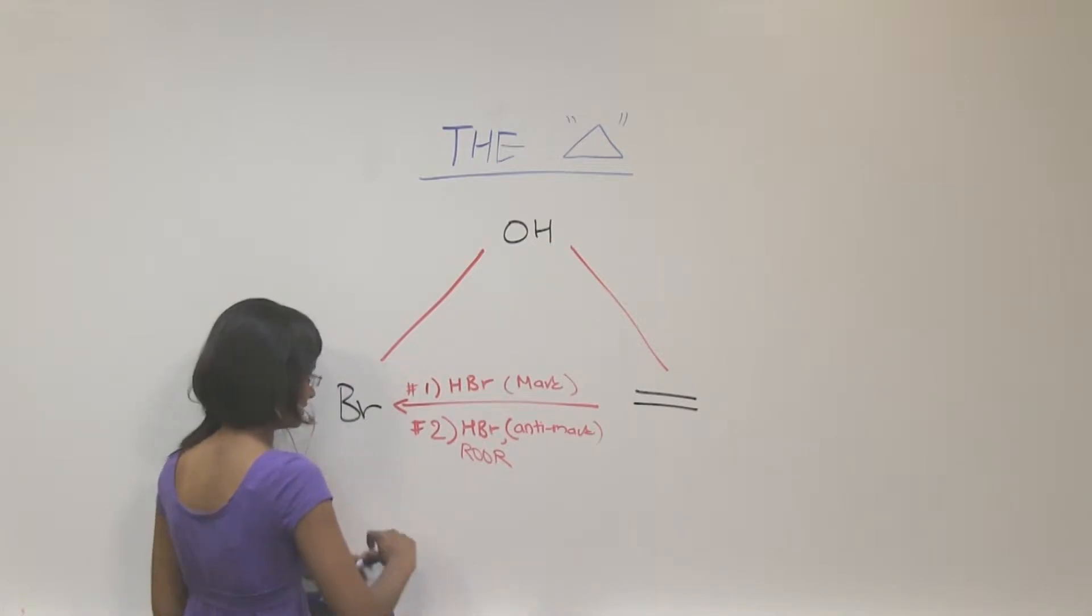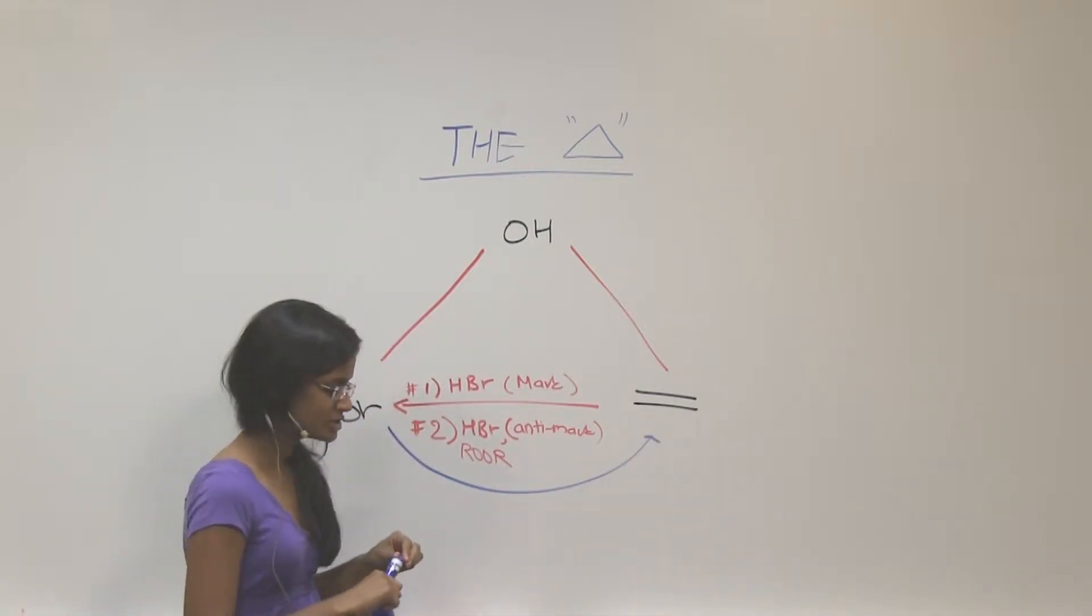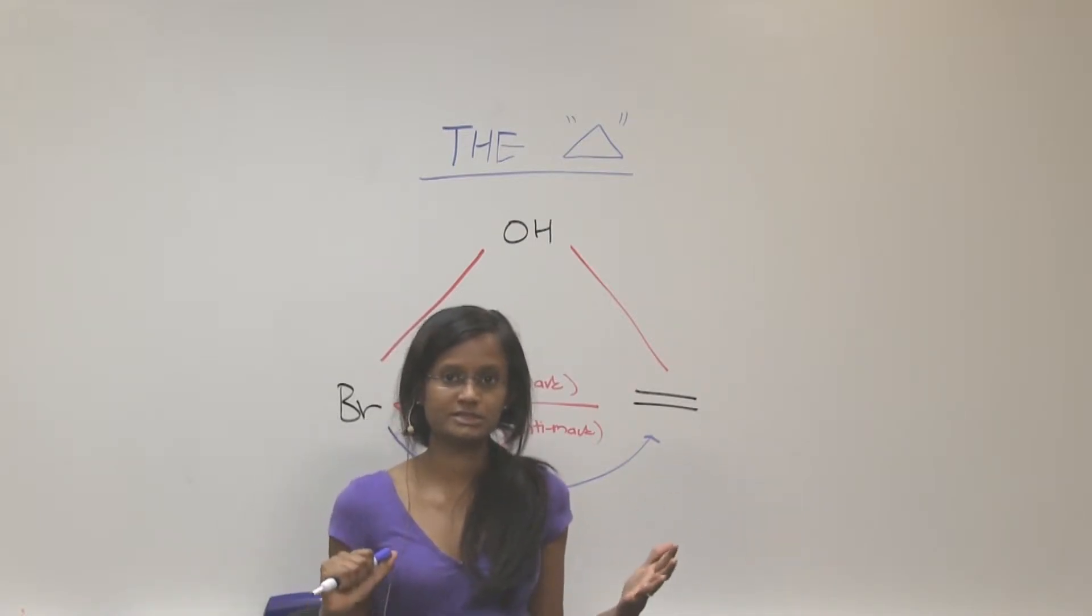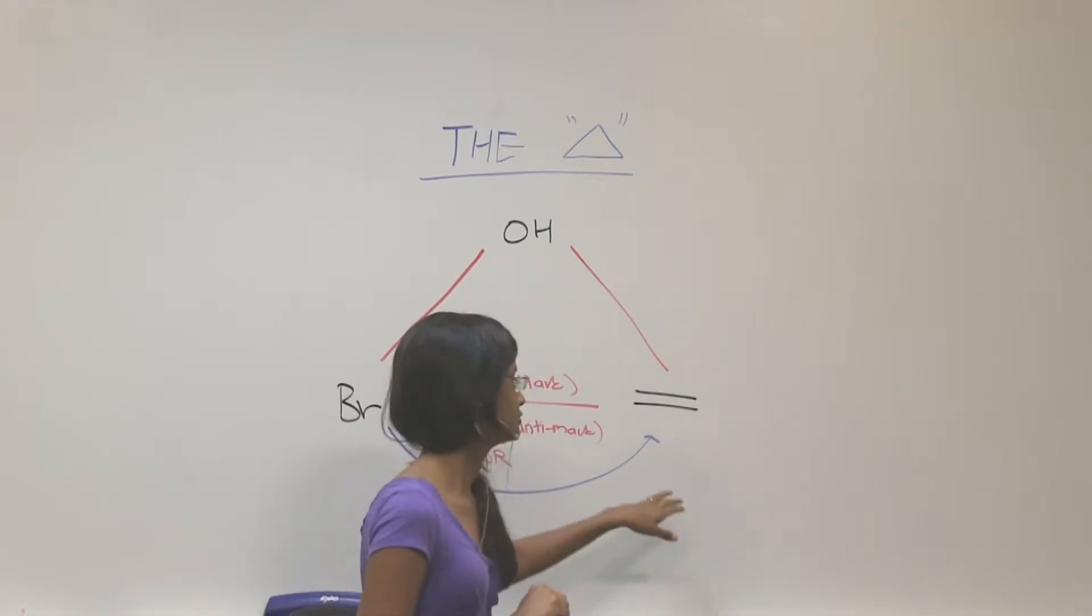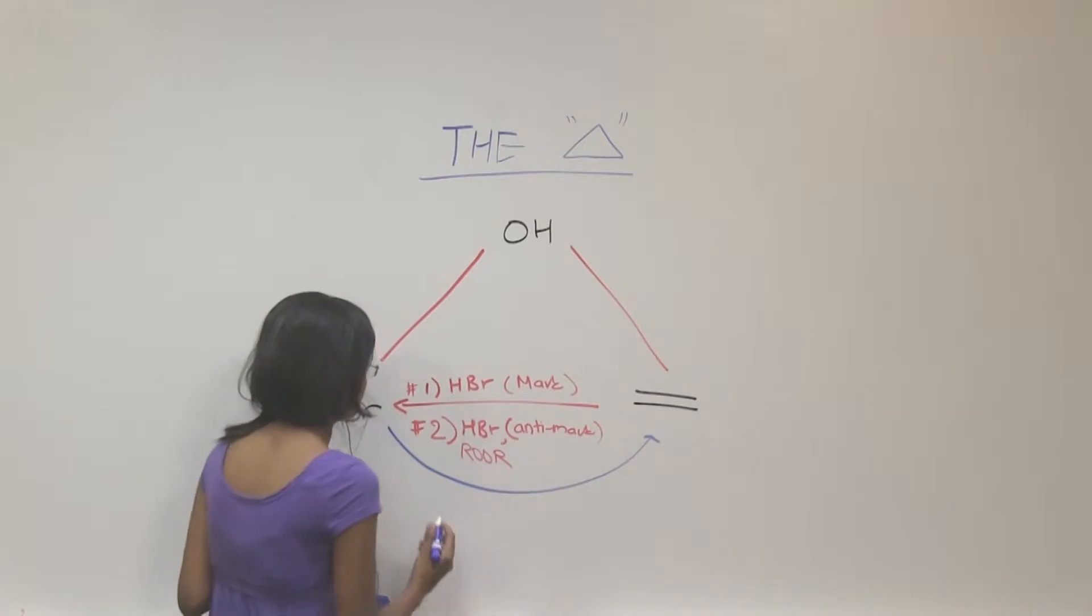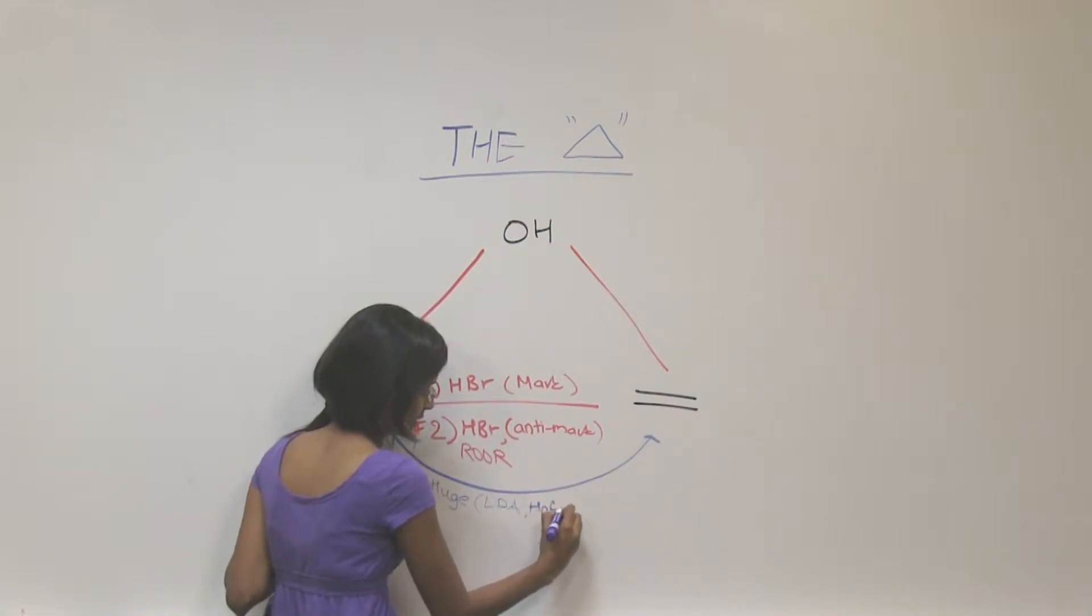Alright, let's talk about how do you go from bromine to alkene. So in chapter 9, you learned elimination. Elimination of halogens will give you unsaturation, and it will lead you to an alkene. So you have two different options. The first one is using a huge base, which would be LDA, and that would get you to the Hoffman product.